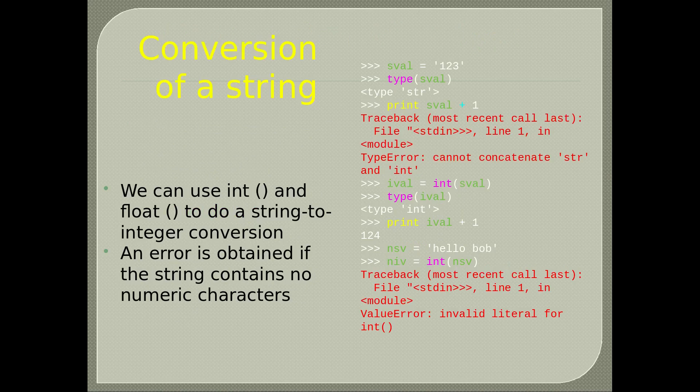Conversion of a string: we can use int() and float() to do a string-to-integer conversion. sval = '123': type(sval) says string. An error is obtained if the string contains no numeric characters. Write ival = int(sval): type(ival) says integer. print(ival + 1) gives 124.